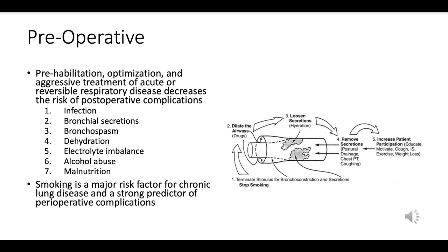Preoperative preparations, often termed prehabilitation, are crucial for enhancing a patient's readiness for surgery. Prehabilitation is the process of enhancing functional capacity before surgery to improve tolerance to upcoming stressors. Addressing acute or reversible respiratory conditions can significantly decrease the risk of complications. Respiratory infections should be treated and controlled before elective surgeries.